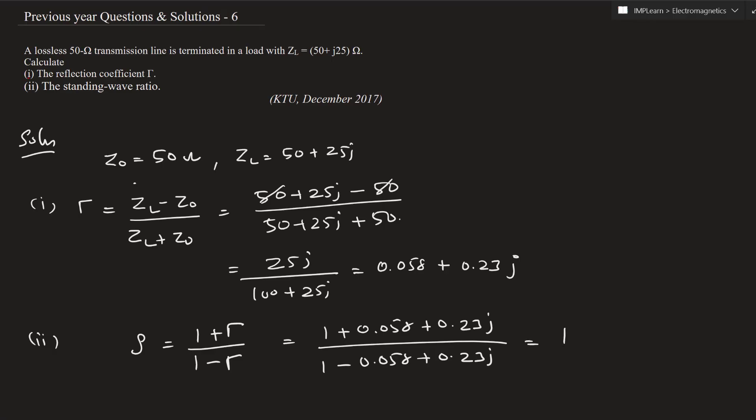Which is equal to 1 plus 0.48j. This is the standing wave ratio.